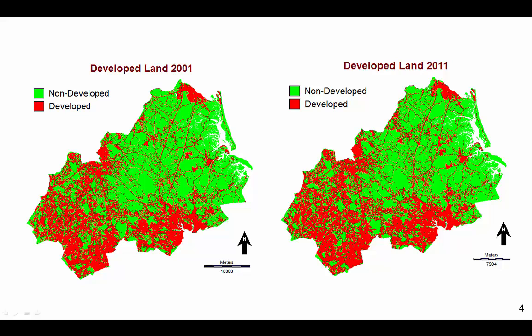A land cover map from a second time point is not necessarily required for GEOMOD because GEOMOD simulates only the spatial allocation of change. However, a map from a second time point can be used to specify the quantity of change. We use a map of developed versus non-developed land at 2011 to specify the quantity of change. Both maps originate from the National Land Cover Database, which created the maps from satellite-based imagery.